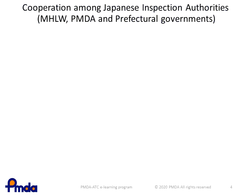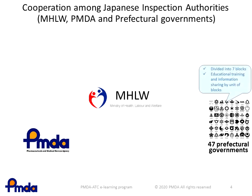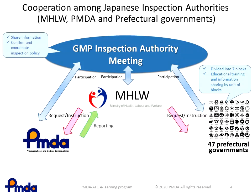The Japanese inspection authority consists of PMDA, MHLW, and 47 prefectural governments who cooperate with each other on inspections. The 47 prefectural governments are divided into seven blocks and share educational training and information by the unit of blocks. We have established the GMP inspection authority meeting with the purpose of sharing information and enhancing cooperation among authorities. MHLW requests PMDA and the 47 prefectural governments to conduct GMP inspection, and they report the results to MHLW.